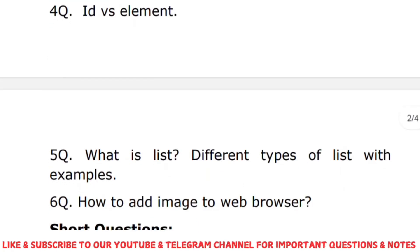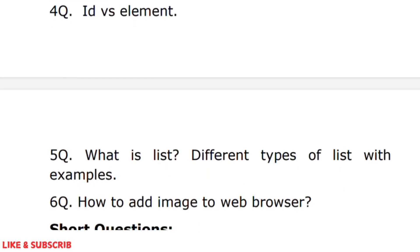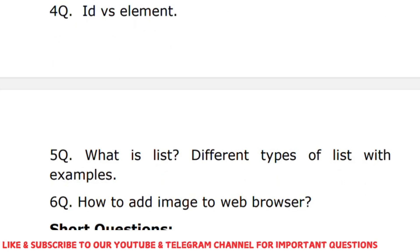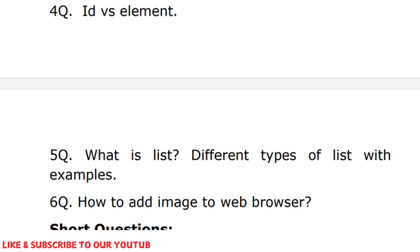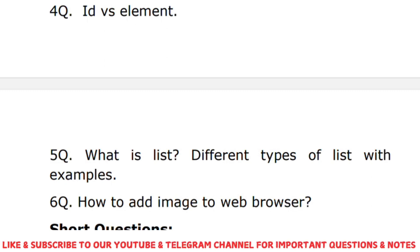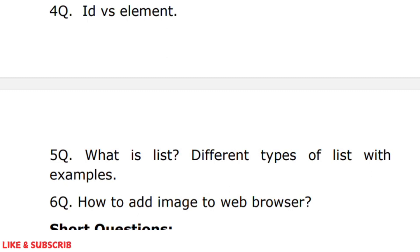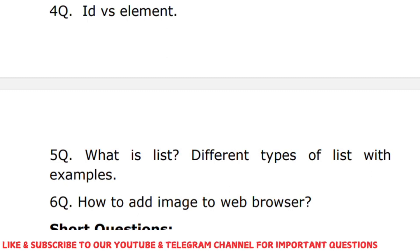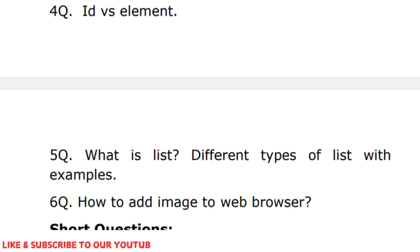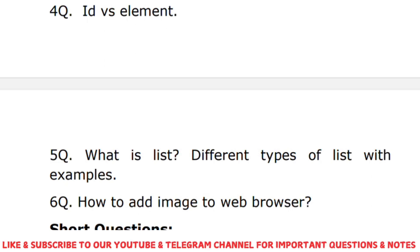For unit one long answers, there are two more questions. What is a list and the different types of lists with examples? Lists are of three types: ordered list, unordered list, and definition list. An ordered list is represented with the ol tag, an unordered list with the ul tag, and a definition list with the dl tag. Use ordered list for sequential items, unordered list for bullet symbols, and definition list for definitions and abbreviations.